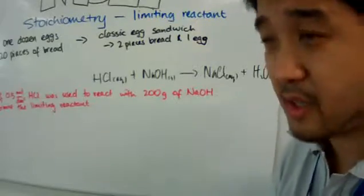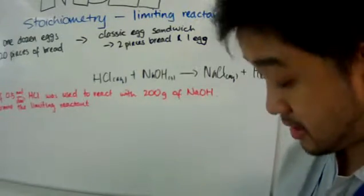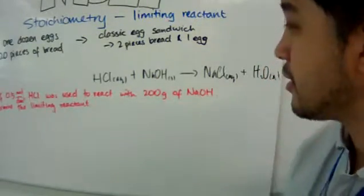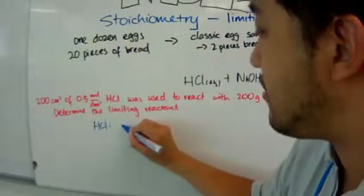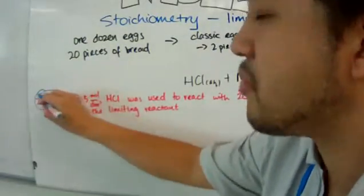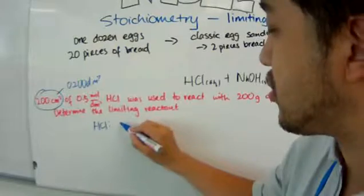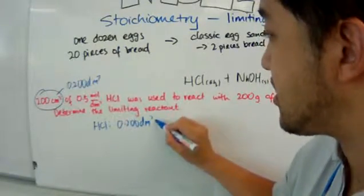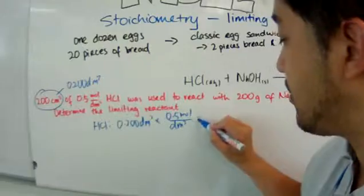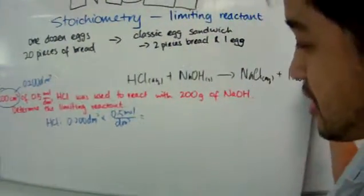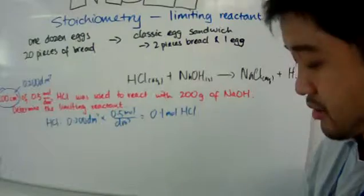The second step is to determine the moles of hydrochloric acid and sodium hydroxide. For hydrochloric acid, I convert 200 cm³ to 0.200 dm³, then multiply by 0.5 mol/dm³, which gives me 0.1 moles of HCl.